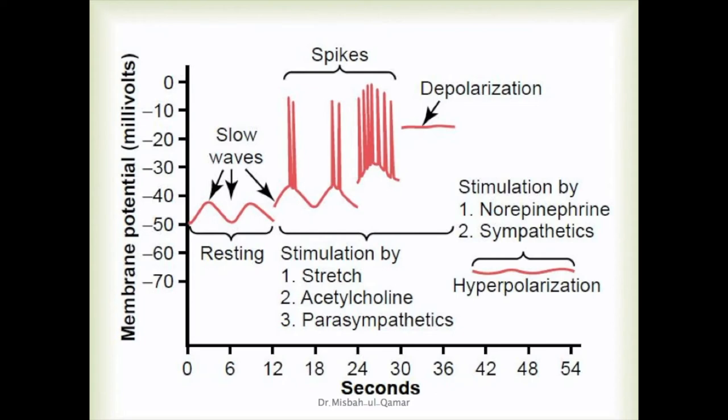Depolarization — in which the potential becomes more positive and the muscle becomes more excitable — is caused by stretch, acetylcholine, parasympathetic stimulation, and some specific GI hormones. For hyperpolarization — in which the potential becomes more negative and the muscle becomes less excitable — the hyperpolarizing factors include epinephrine and norepinephrine, as well as sympathetic stimulation, which mainly causes norepinephrine secretion.